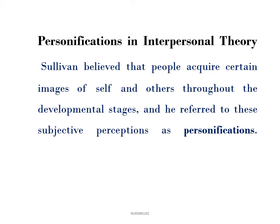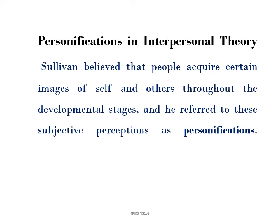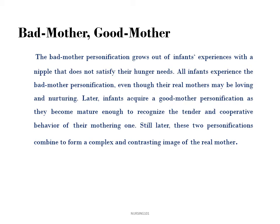Now let's talk about personifications in Sullivan's theory. Sullivan believed that people acquire certain images of self and others throughout the developmental stages, and he referred to these subjective perceptions as personifications. The first personification is bad mother and good mother. The bad mother personification grows out of infants' experiences with a nipple that does not satisfy their hunger needs. All infants experience the bad mother personification even though their real mothers may be loving and nurturing. Later, infants acquire a good mother personification as they recognize the tender and cooperative behavior of their mothering one. Eventually these two personifications combine to form a contrasting image of the real mother.